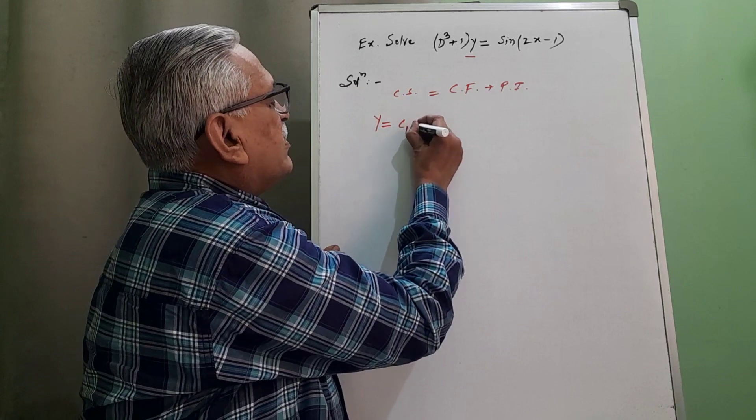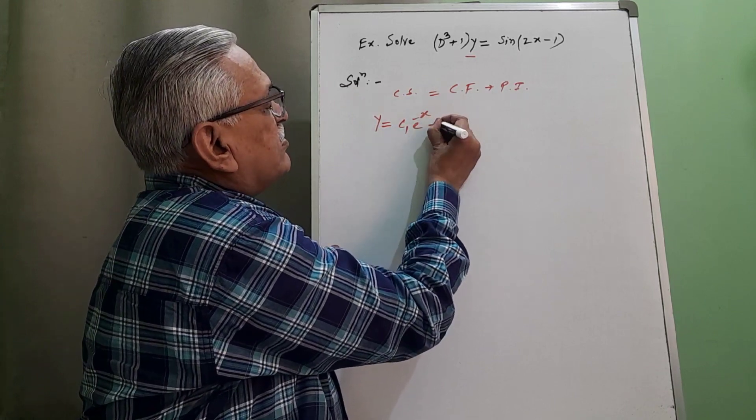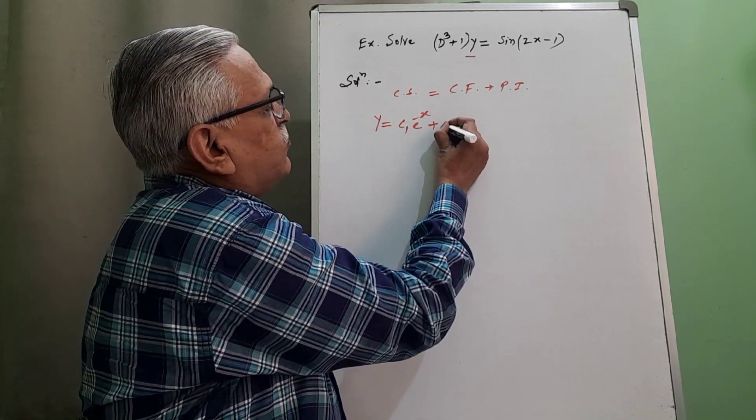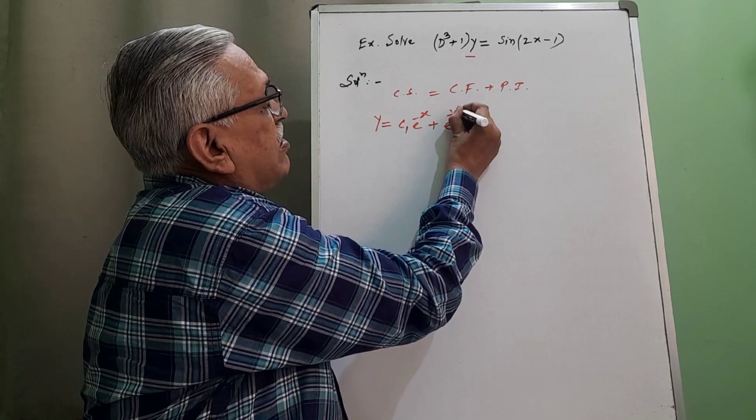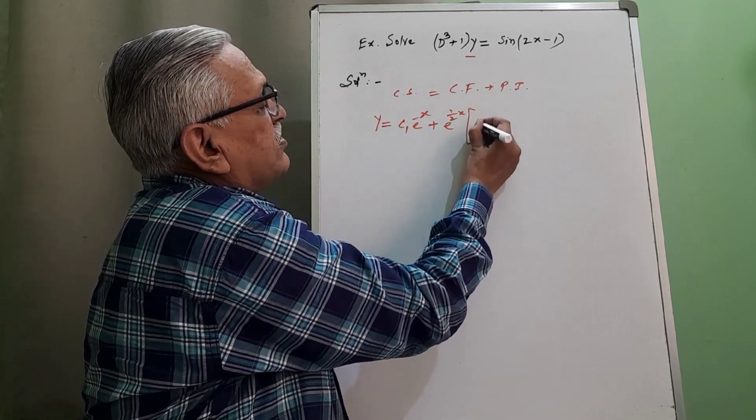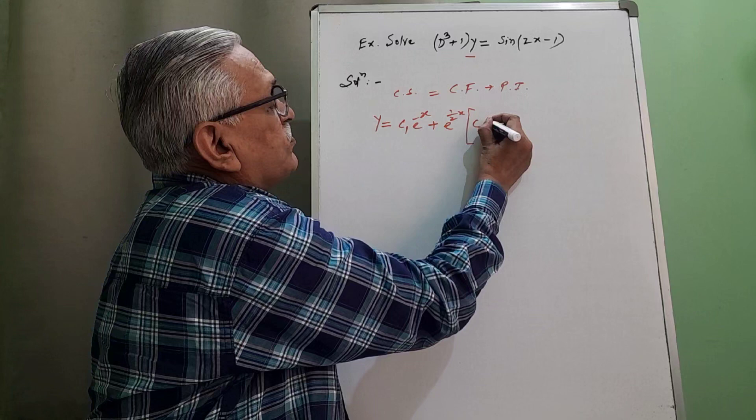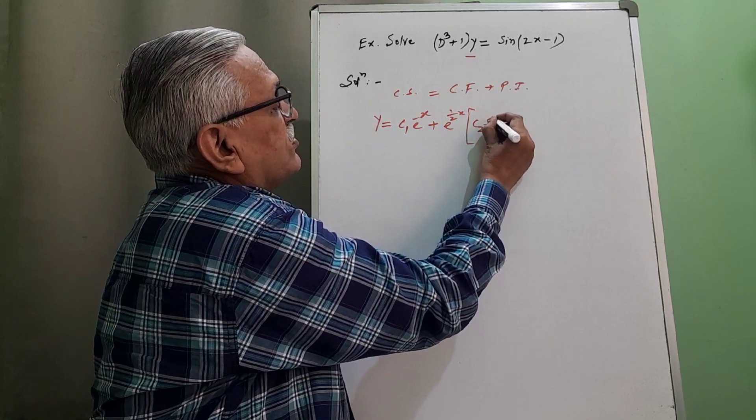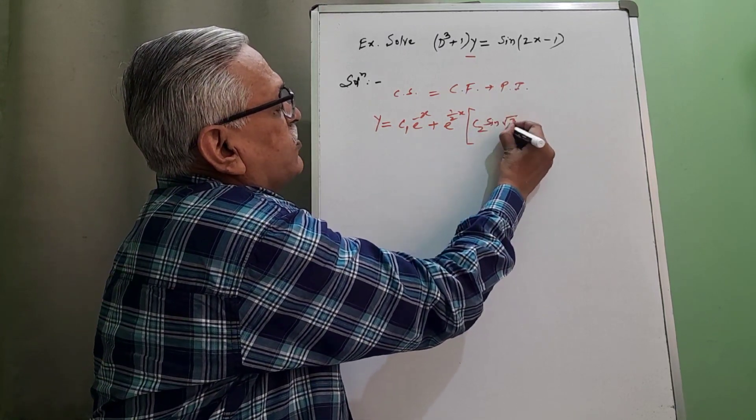Equation 1 is C1 e raised to minus x plus e raised to 1 by 2 x, C2 sin of root 3 by 2 x.